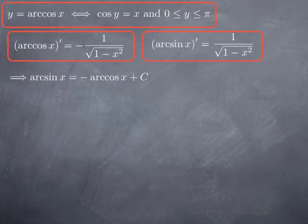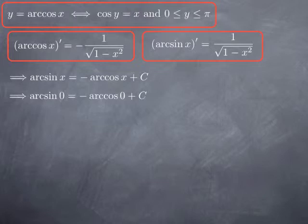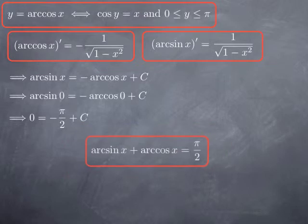We can calculate this constant by plugging in x = 0. Arcsin(0) equals 0, and arccos(0) equals π/2, because π/2 is the angle between 0 and pi where the cosine is 0. Therefore, 0 equals negative π/2 plus c, so the constant c is π/2. We obtain the formula: arcsin(x) + arccos(x) = π/2.